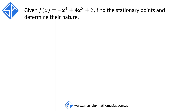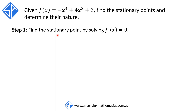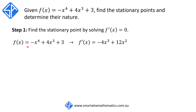Let's now look at how we can apply this idea of using the signs of the first derivative to help us determine the nature of the stationary points on the curve. For our example, we're given f(x) = -x⁴ + 4x³ + 3 and we want to find the stationary points and determine their nature. The first step is to find the stationary points by solving f'(x) = 0. The derivative of f(x) is f'(x) = -4x³ + 12x².